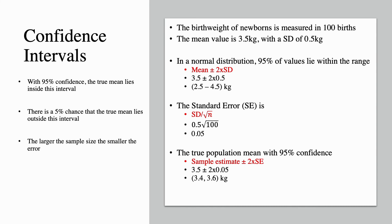With a confidence interval, we can say with 95% confidence that the true mean lies inside this interval, and there is a 5% chance that the true mean lies outside this interval. The larger the sample size, the smaller the error.